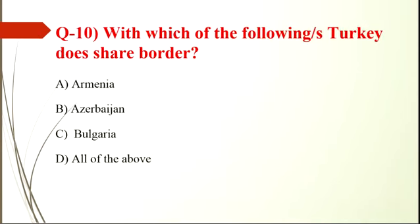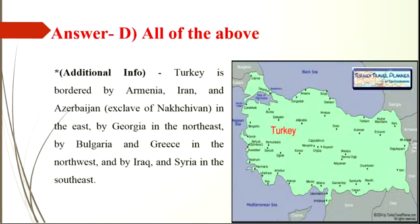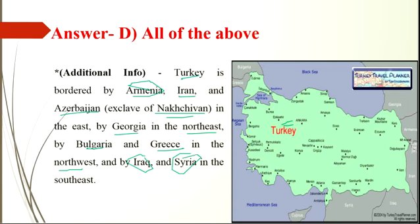Question number 10: with which of the following does Turkey share borders? Turkey shares borders with Armenia, Azerbaijan, and Bulgaria, so the option will be D, all of the above. Looking at the map of Turkey, it is bordered by Armenia, Iran, and Azerbaijan to the east, Georgia to the northeast, Bulgaria and Greece to the northwest, and Iraq and Syria to the southeast. Do remember that Turkey also shares a border with Azerbaijan.